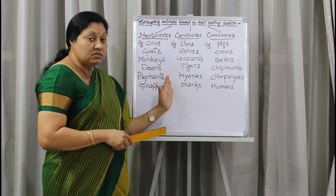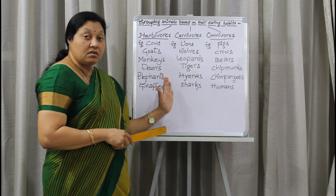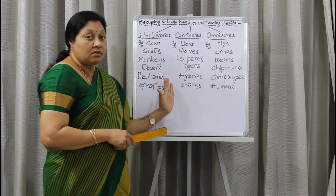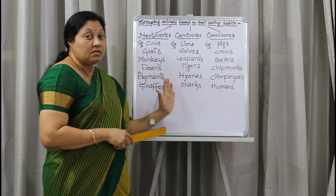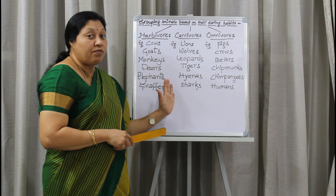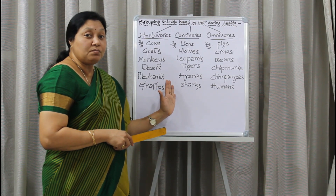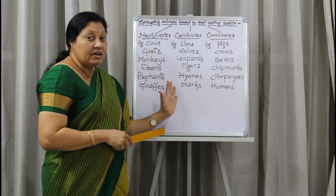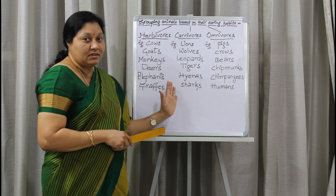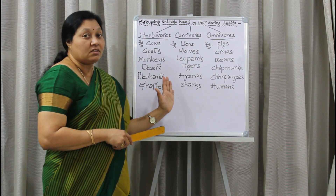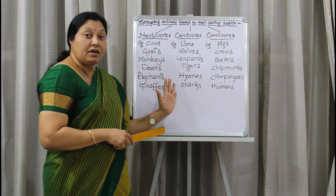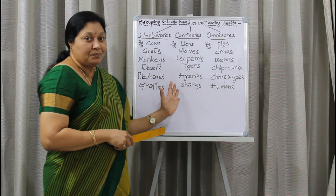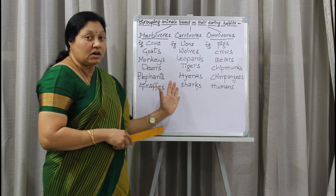You know hyenas, eagles, and vultures — they are also called scavengers. Do you know the meaning of scavengers? They depend on dead flesh. They consume dead flesh and play a major role in maintaining a healthy habitat. Scavengers are animals that eat dead meat and maintain healthy surroundings.